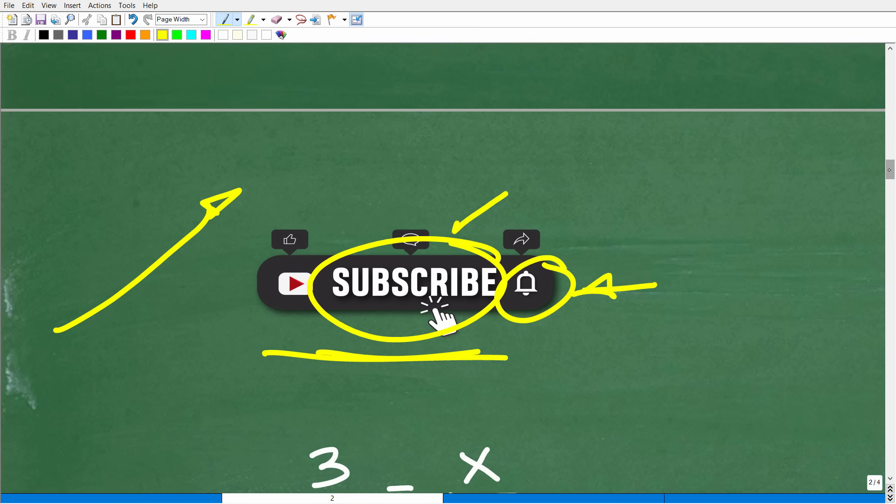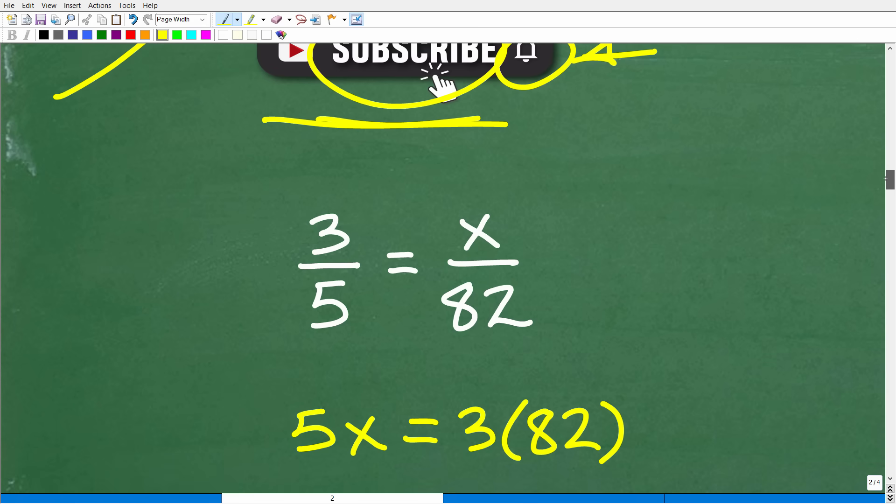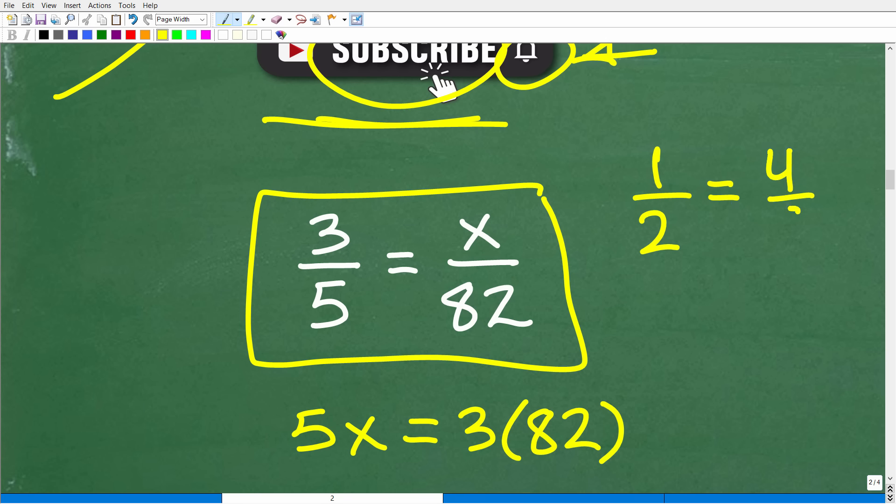and the objective here is to solve this proportion. Now, a proportion, by definition, is two equal fractions. Let me give you a simple example. If I have the fraction one-half, let's think of another fraction that is equal to one-half. How about maybe like four over eight? We could have five over 10, three over six, or 100 over 200. It doesn't make a difference, right? So again, a proportion is two equal fractions.